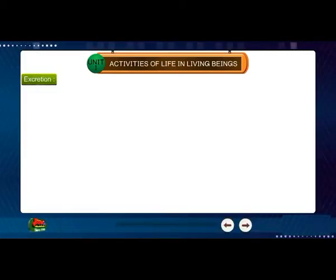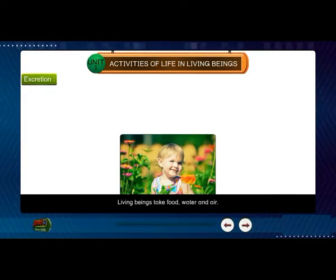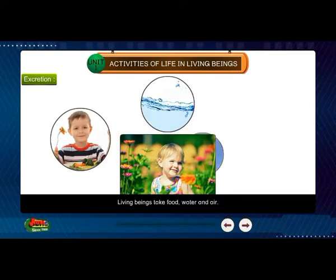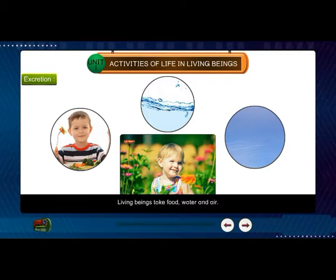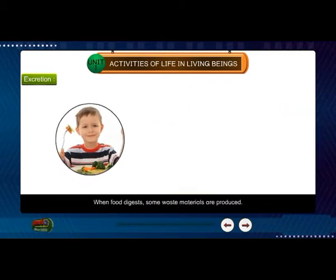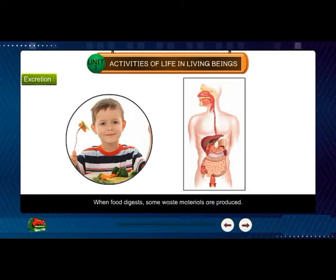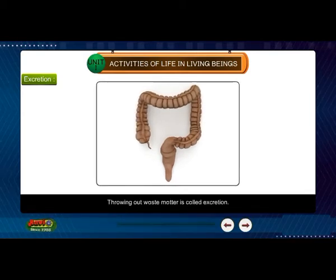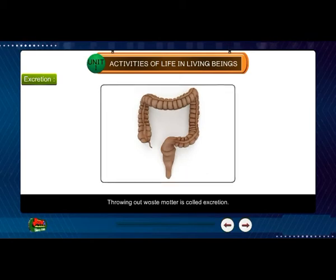Excretion. Living beings take food, water and air. When food digests, some waste materials are produced. It is called faeces and is thrown out through the anus. Throwing out waste material is called excretion.